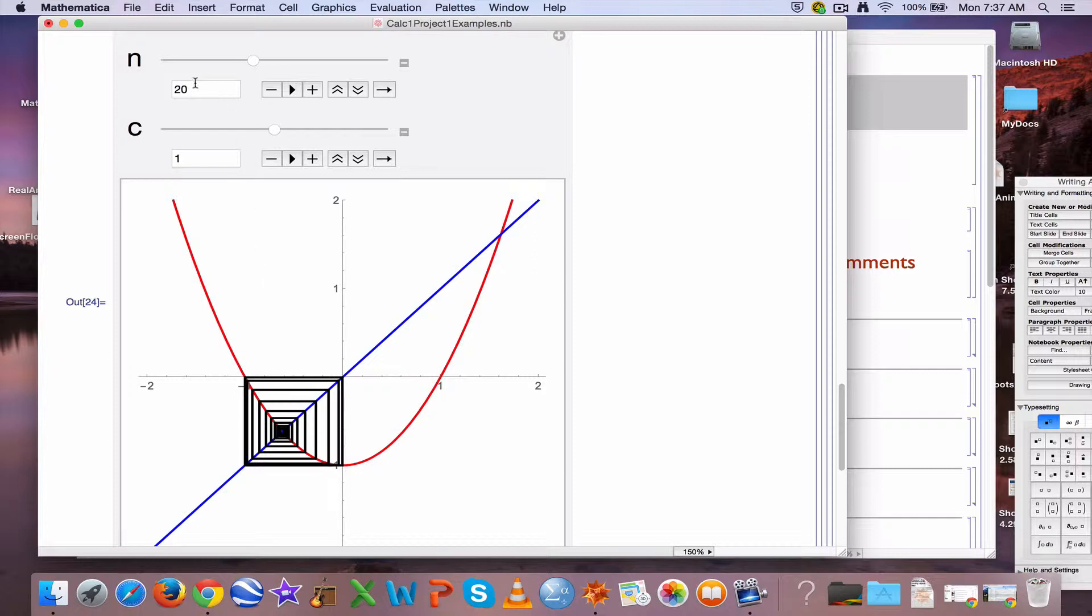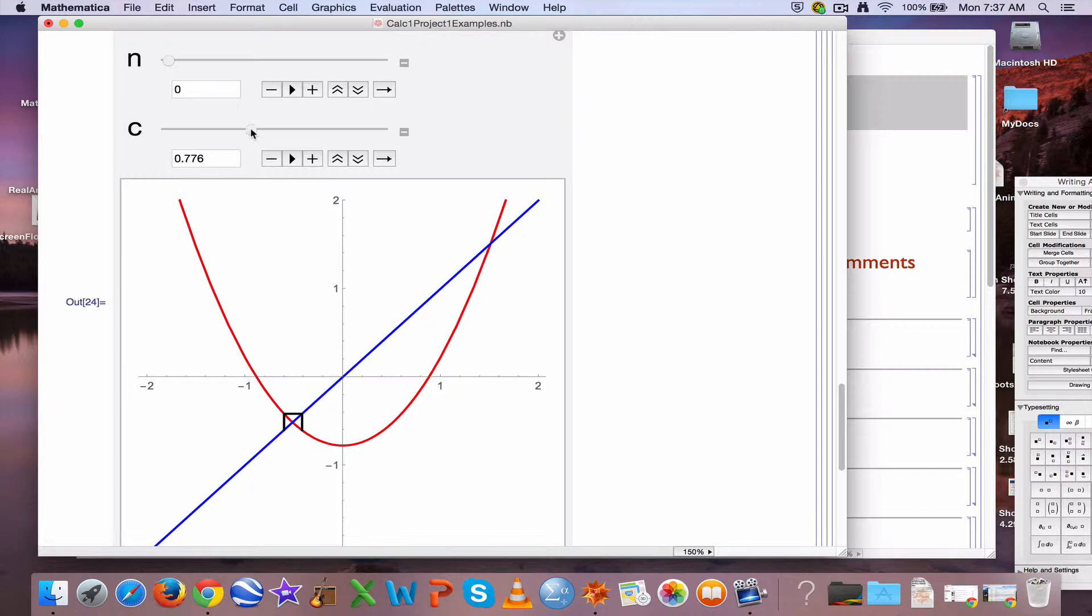The key thing about these cobweb plots is they help you understand why you are forced to do certain things. I claim the key reason that this fixed point here is repelling is because the absolute value of the derivative here at this point of intersection for this red graph is bigger than 1. If we change the value of c, we can illustrate this another way. If I decrease c so that the vertical displacement from the x squared graph is less, I can change it so that intersection point has a slope that's less than 1 in absolute value.